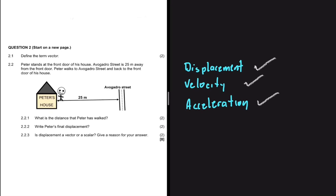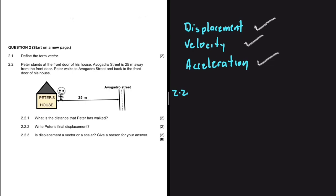In question 2.2, Peter stands at the front door of his house. Avogadro Street is 25 meters away from the front door. Peter walks to Avogadro Street and back to the front door of his house. The first question, 2.2.1, asks what is the distance that Peter has walked. We need to ask ourselves: is distance a scalar or a vector? Distance is a scalar — it only has magnitude.